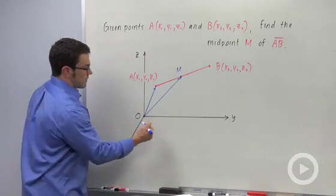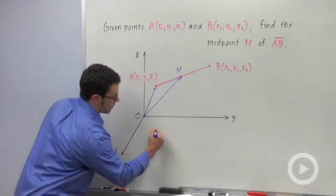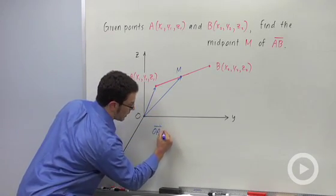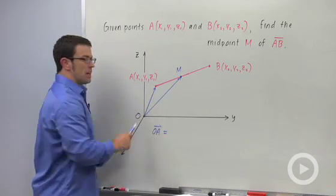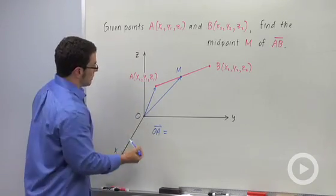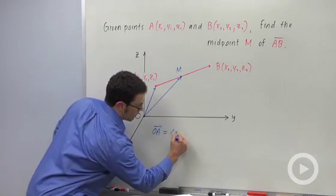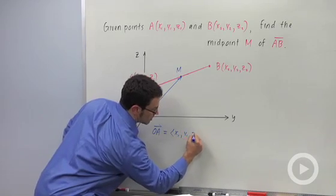Now, let's find the components for position vector OA. And let's recall that the components of a position vector are exactly the coordinates of the endpoint of that vector. So they're going to be x₁, y₁, z₁.